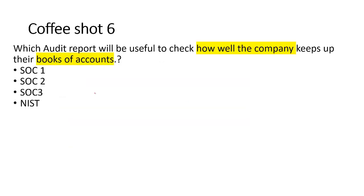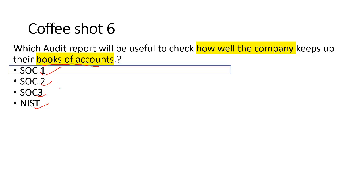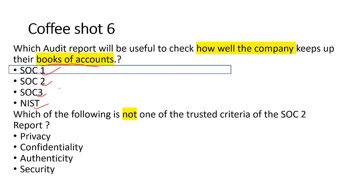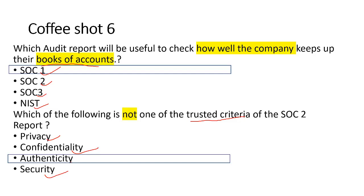Question 7: Which audit report is useful to check how well a company keeps its books of account? NIST is about IT; SOC 3 is a high-level compliance overview; SOC 2 talks about effectiveness of IT controls. We're left with SOC 1 — because it talks about the accuracy of financial statements, and books of account map to financial statements. Answer: SOC 1. Question 8: Which of the following is NOT one of the Trust Services Criteria of SOC 2? The five criteria are privacy, confidentiality, security, availability, and processing integrity. Authenticity is not one of them. Answer: Authenticity.